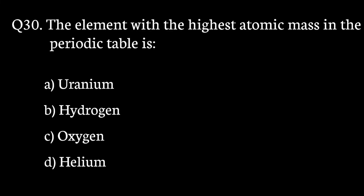Question number 30. The element with the highest atomic mass in the periodic table is? The correct answer to that question is option A. Uranium.